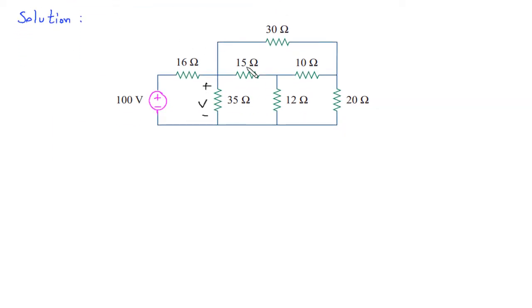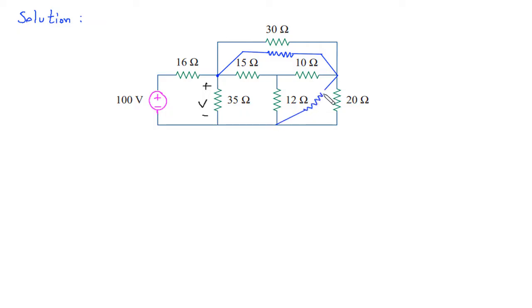Then we will convert this Y connection into its equivalent delta connection. Let us say this is Ra, this is Rb, and this is Rc.